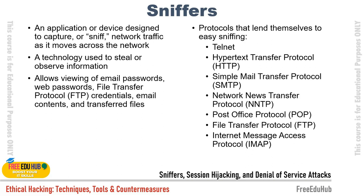SMTP is commonly used to transfer emails but does not include any protection against sniffing. NNTP communication is sent in clear text including passwords. POP is designed to retrieve email from servers but lacks protection against sniffing. FTP is designed to send and receive files but lacks encryption. IMAP is similar to SMTP in function and also lacks protection. To protect communications, we can switch from FTP to SFTP and change IMAP, POP, and SMTP port numbers to make communication harder to capture.